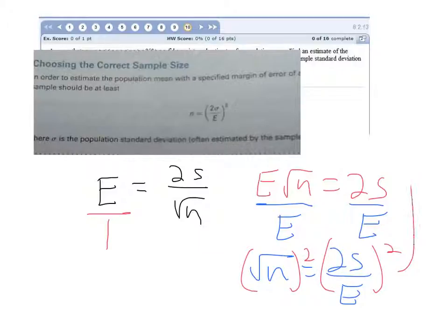And if you notice, the only difference between this formula and that formula is they're telling us the population standard deviation here. That's the sample standard deviation. It's hard to come up with a sample standard deviation when you haven't taken a sample yet. So that's why they're using that estimate of the population standard deviation. So, now let's work this.